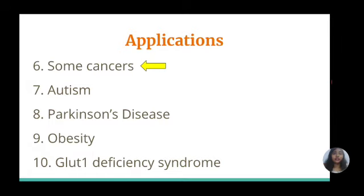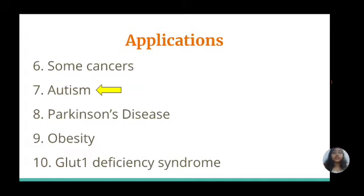Autism spectrum disorder, or ASD, refers to a condition characterized by problems with communication, social interaction, and in some cases repetitive behaviors. Early research suggests that some people with autism spectrum disorders may experience improvements in behavior when ketogenic diets are used in combination with other therapies.